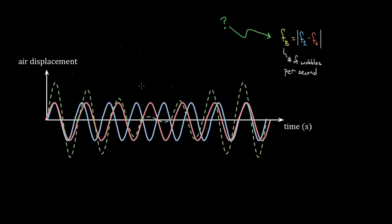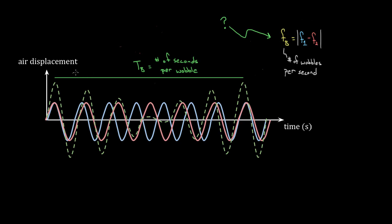But why is this the formula for beat frequency? Why isn't it something more complicated? That's what I want to show you how to derive. The way we'll approach it is: instead of finding beat frequency directly, let's find the beat period first. If beat frequency is number of wobbles per second, then the beat period is the number of seconds per wobble — how long it takes to go from constructive all the way back to constructive again. Because frequency is always just one over the period, if we can find the beat period, all we have to do is take one over that to get the beat frequency.